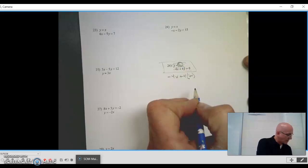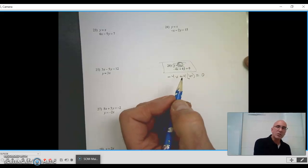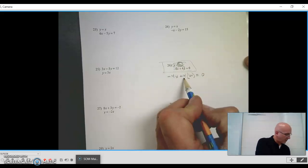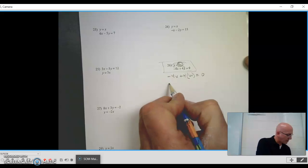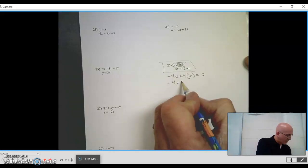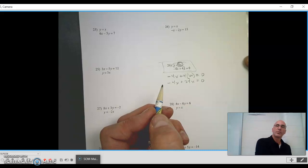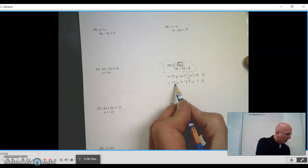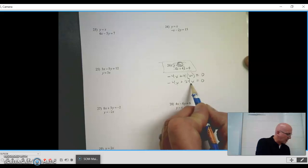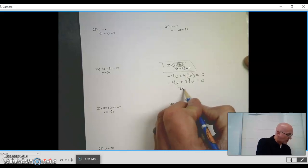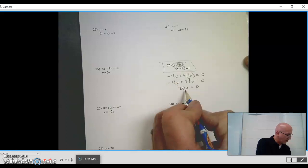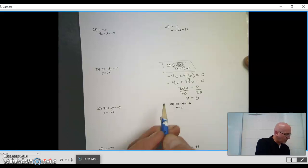4 times 6x equals 0. Now I'm going to do my PEMDAS. I have to multiply this together first. So let's rewrite: negative 4x plus 4 times 6x is 24x equals 0. Now I am going to combine these. I have a negative 4x and a 24x, and I get 20x equals 0. I am going to divide both sides by 20. x equals 0.